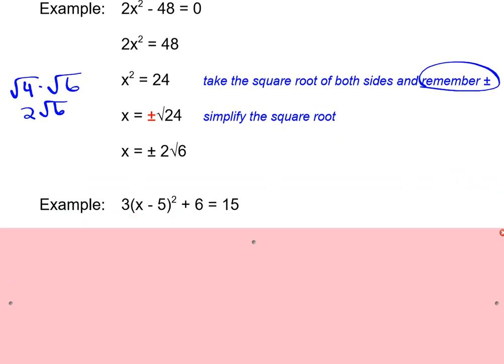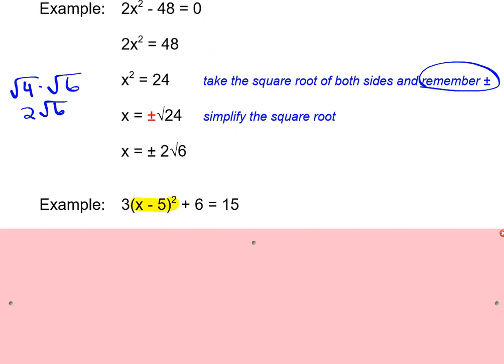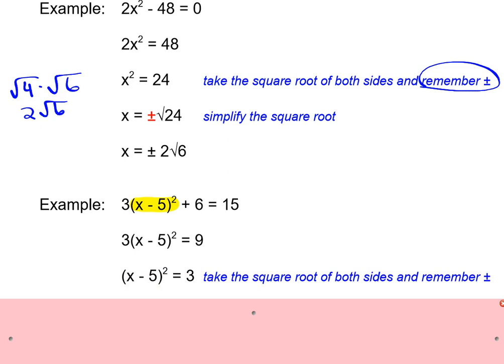Okay, our next example just has a few more numbers in it. And this time you notice we have the parentheses. So we have 3(x - 5)² + 6 = 15. On these, we still want to isolate the squared term. So what's being squared this time is the x - 5. So when I'm trying to isolate, I'm trying to isolate this whole thing, which means I need to get rid of the 6, and I need to get rid of the 3. So I'm going to start out by subtracting 6 from both sides, which would give me 3(x - 5)² = 9. So I subtracted the 6. Now I'm ready to divide by 3 on both sides. So that gives me (x - 5)² = 3.